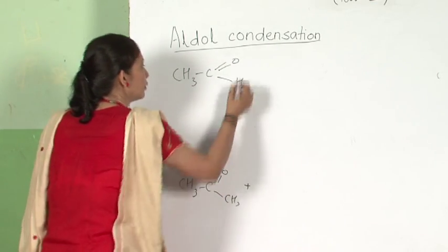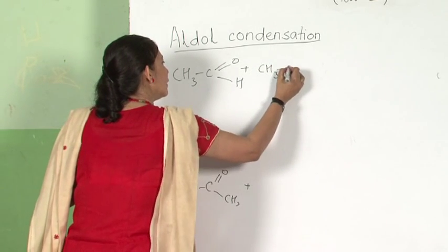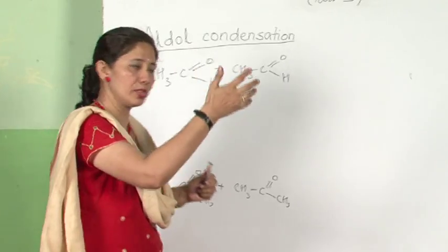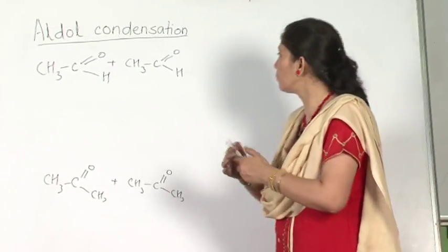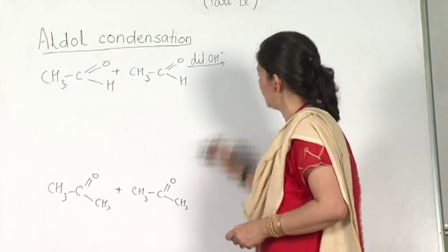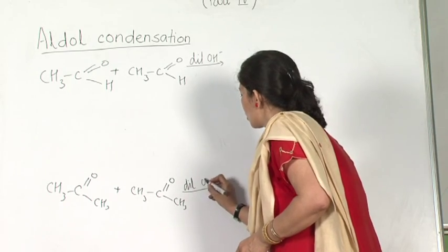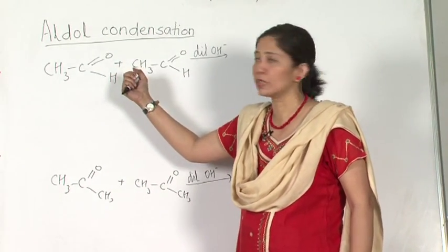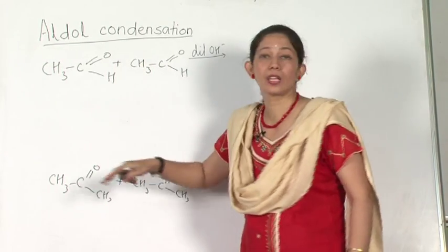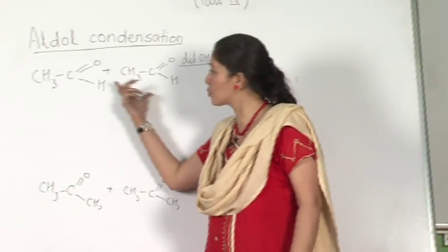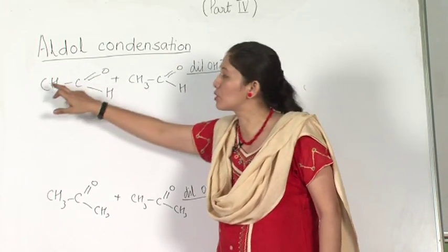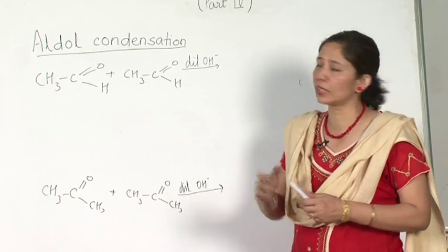In the previous reaction — Cannizzaro's — the carbonyl compound was only an aldehyde without alpha hydrogen. But when I come to aldol condensation, it can be both aldehyde and ketone. I am taking acetone as the ketone example; there are two molecules. Cannizzaro used concentrated alkali; here aldehydes or ketones react with dilute alkali (dilute OH⁻ — whether NaOH or KOH). At least one of the reactants must have alpha hydrogen — that is the condition.